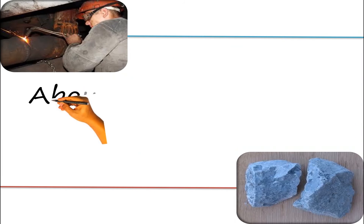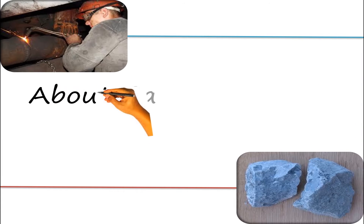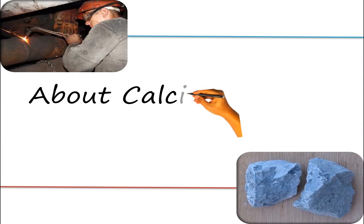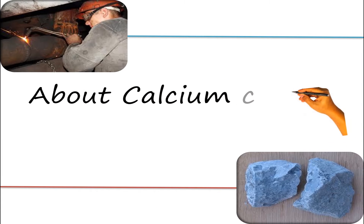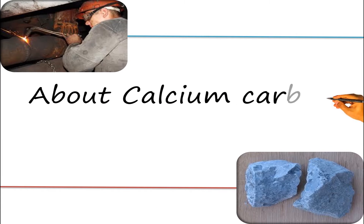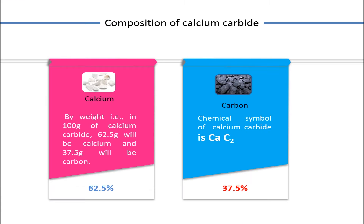Welcome to the online class, week 9, about calcium carbide. Calcium carbide is a chemical compound consisting of calcium 62.5% and carbon 37.5%.